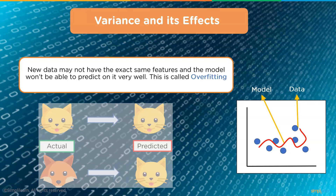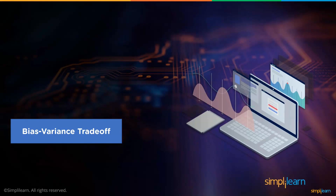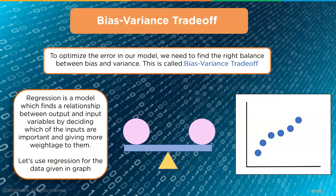Underfitting is where the model looks at just a generic profile — it's not trained well enough. Overfitting is the opposite: it's so trained to the data that it looks for very exact outputs. Many modern models stop fitting when they look at data not used in training and automatically stop when the amount of error is about the same between training and test sets. To optimize the error in our model, we need to find the right balance between bias and variance. This is called the bias-variance tradeoff.